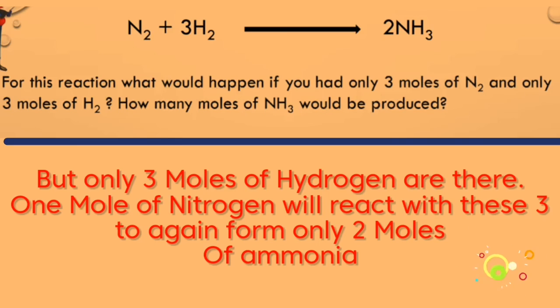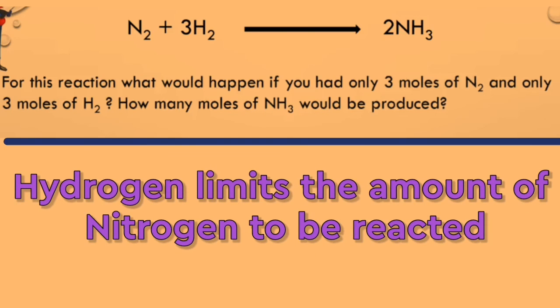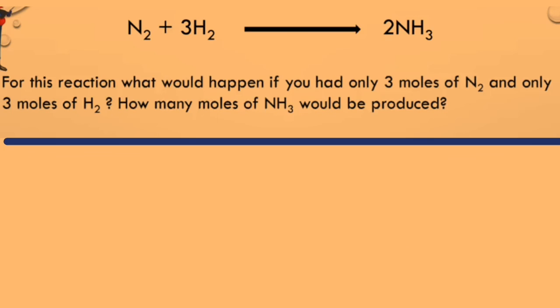So the three moles of hydrogen gas would control the reaction by reacting with only one mole of nitrogen gas, leaving two moles of nitrogen gas unreacted. Here, the hydrogen gas is controlling the reaction - it is limiting the reaction, and hence it's called the limiting reactant or sometimes referred to as the limiting reagent.